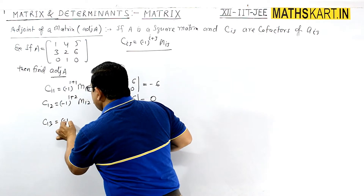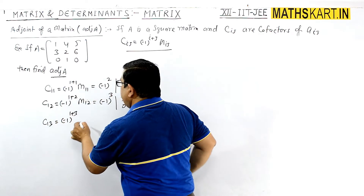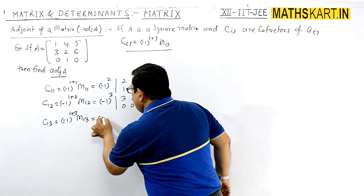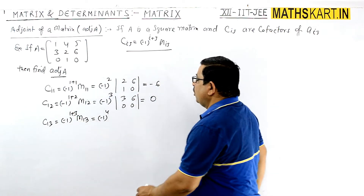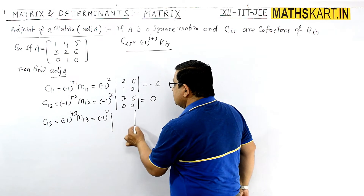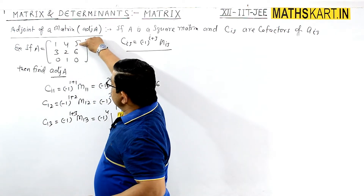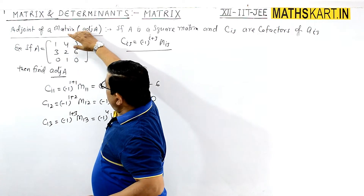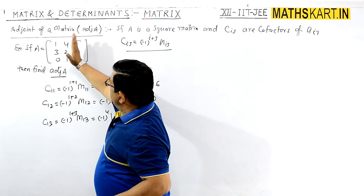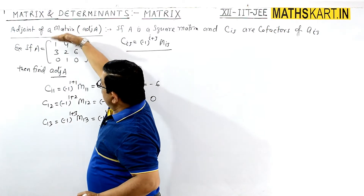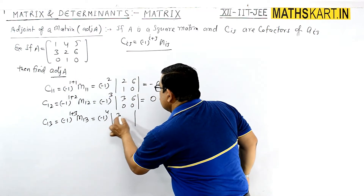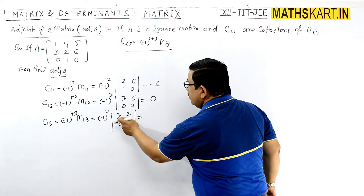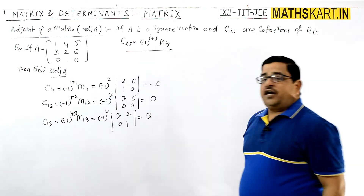Now C_13 = (-1)^(1+3) × M_13 = (-1)^4 × M_13, which is positive. For M_13, remove the corresponding column and row, leaving |3,2; 0,1| = 3 − 0 = 3. So C_13 = 3.